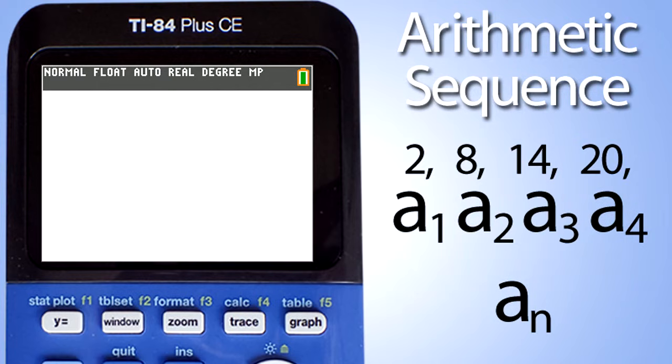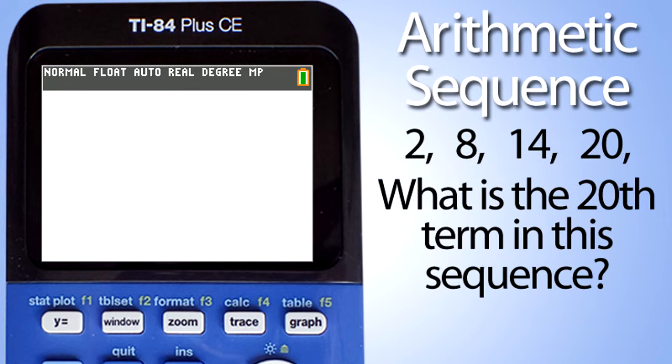Thus we have a sub n to represent the position of the terms. So in these problems, it will ask you, for example, what is the 20th term for this arithmetic sequence? Thus, it is asking for the a sub 20.